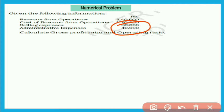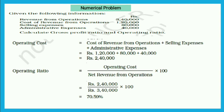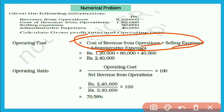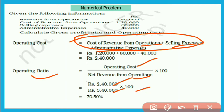अब cost के साथ add करेंगे और revenue from operations से divide करते हुए 100 से multiply करेंगे। Solution: Operating Cost = Cost of Revenue from Operations + Selling Expenses + Administrative Expenses = 1,20,000 + 80,000 + 40,000 = 2,40,000। Operating Ratio = 2,40,000 / 3,40,000 × 100 = 70.59%. इसका मतलब हमारा operating ratio 70.59% आया।